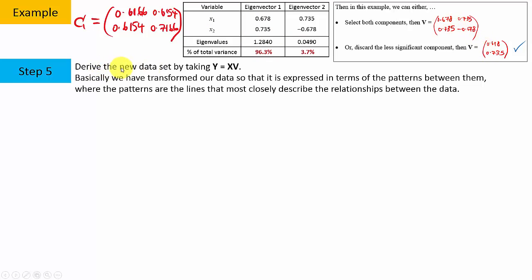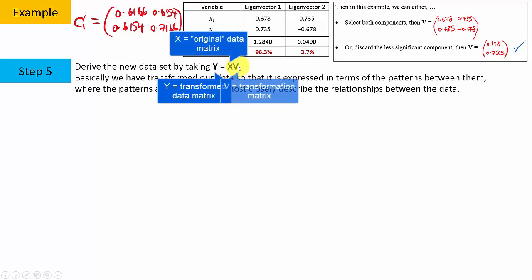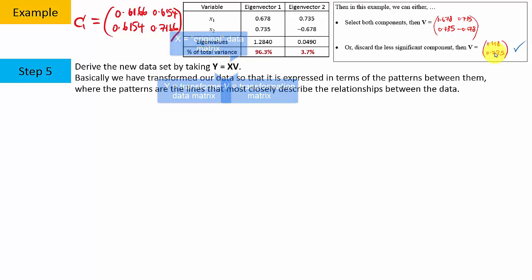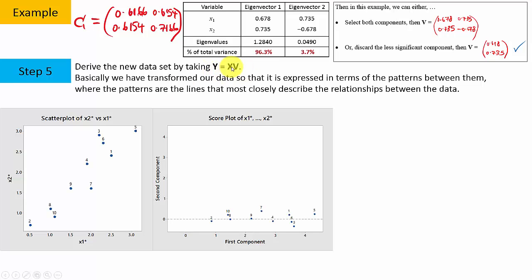So now we can see how transformation is done in PCA. We can transform our dataset to get the new dataset by taking Y equals XV. Here Y is a matrix of the new dataset, X is a matrix of the original dataset, and V is the transformation matrix — either the full 2-column matrix if keeping both PCs, or a single column if keeping only PC1 and discarding PC2.